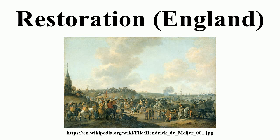Charles Fleetwood was appointed a member of the Committee of Safety and of the Council of State, and one of the seven commissioners for the army. On 9 June 1659, he was nominated Lord General of the Army. However, his leadership was undermined in parliament, which chose to disregard the army's authority in a similar fashion to the post-First Civil War parliament. A royalist uprising was planned for 1 August 1659, but it was foiled.